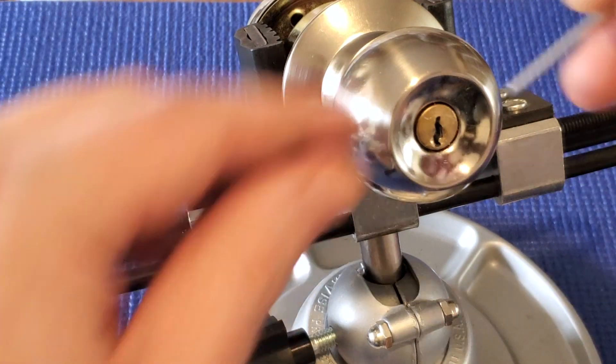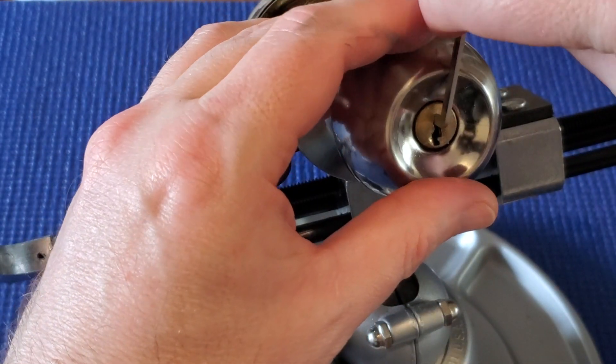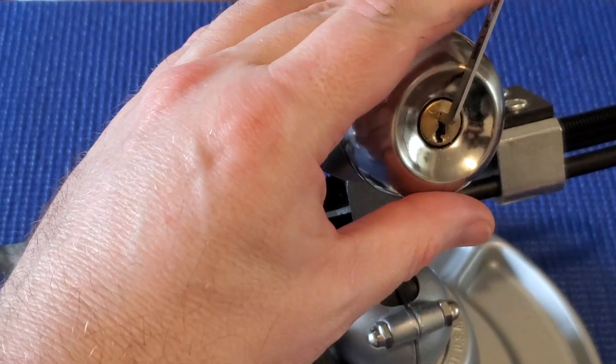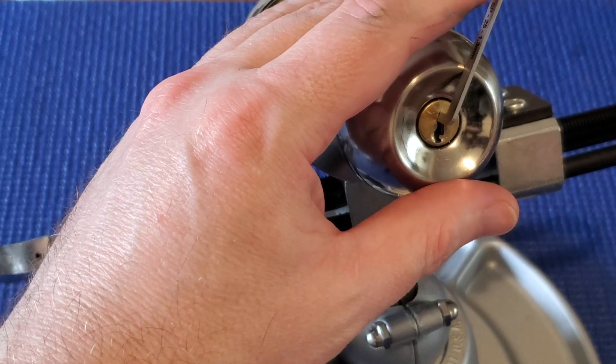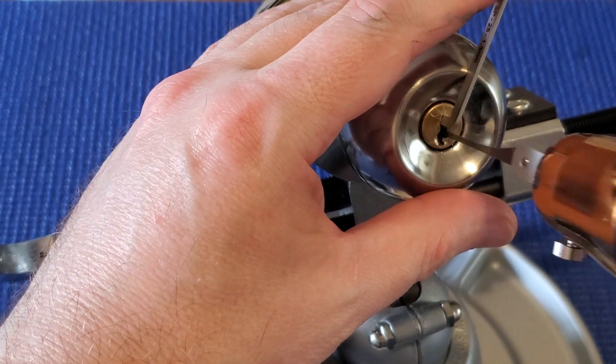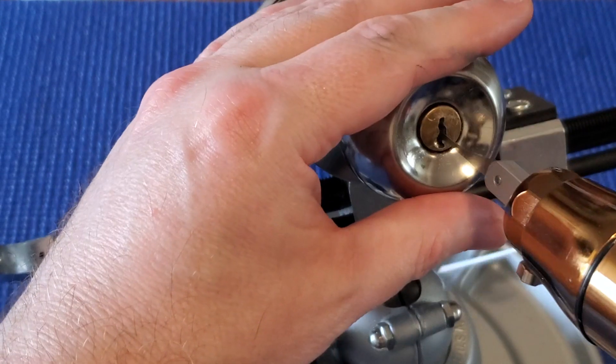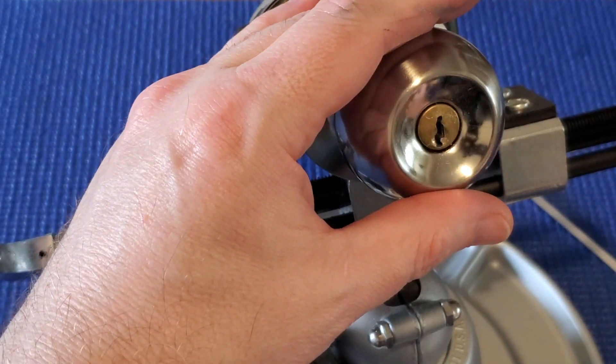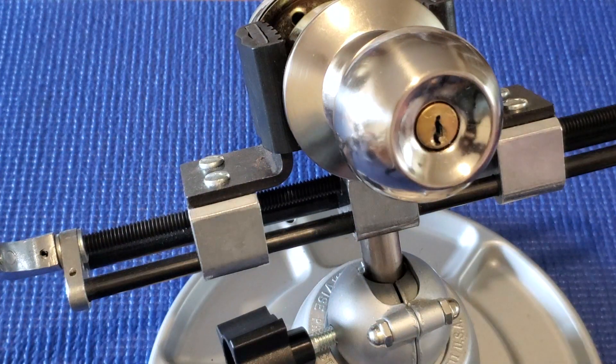And so you change to top of the keyway tension and then you try the Kronos. Plenty of room, but your top tensioner falls out because you wanted to hold it quite loosely.